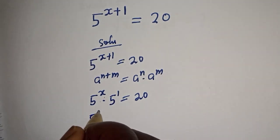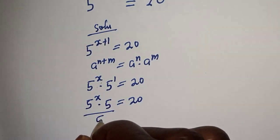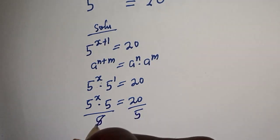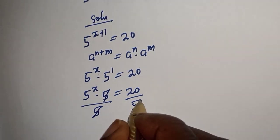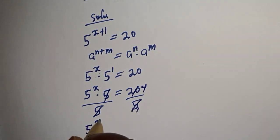Here is 5 raised to power x multiplied by 5 is equal to 20. Let's divide this by 5. Divide this by 5. This will cancel this. 5 here 1, 5 here 4. 5 raised to power x is equal to 4.